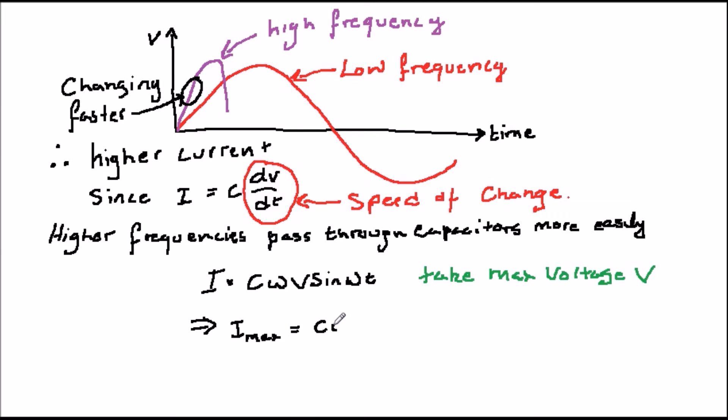This leaves us with I equal C omega V. We can rearrange this to give us the formula that V over I, which is a bit like resistance, is equal to 1 over 2 pi fc.